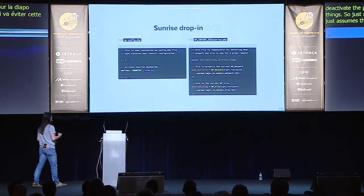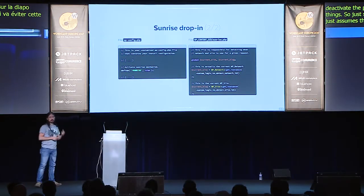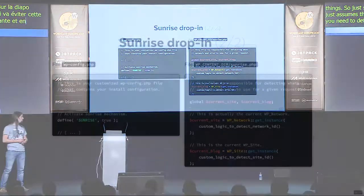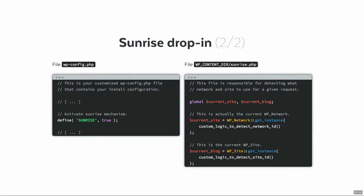For the sunrise drop-in, you need to define the SUNRISE constant in wp-config and then have a sunrise file in the content folder where you return the current site and the current blog as corresponding instances of WP_Network or WP_Site class. They both have a named constructor get_instance which takes an ID, and that ID is the ID used in the database of the multi-site installation. So you can use whatever mechanism you need to define the ID and then get an instance and return it through this mechanism.